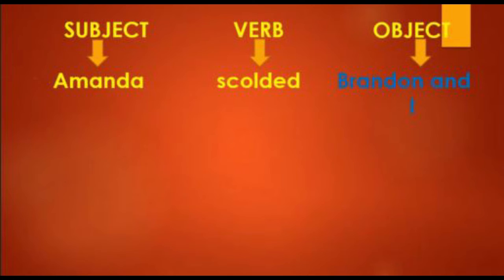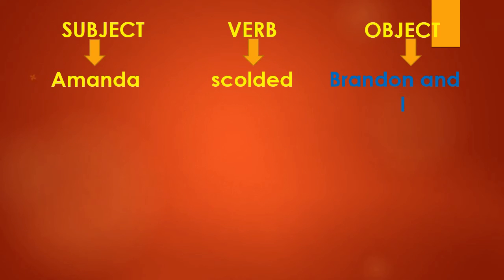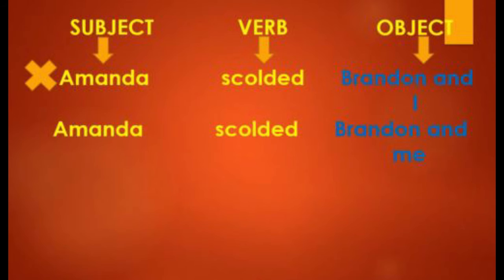Now, the common mistake here is that a lot of people use I in the object form just like this example. Amanda scolded Brandon and I, which is incorrect. The correct sentence for this is Amanda scolded Brandon and me.